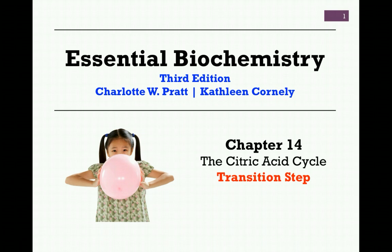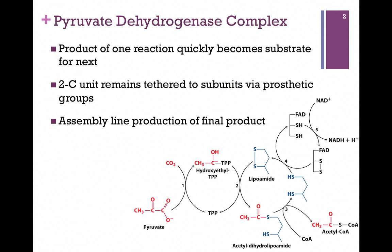In our second lesson on the citric acid cycle from chapter 14, we want to look in greater detail at the transition step, which converts pyruvate to acetyl-CoA. It's called the transition step because we're transitioning between glycolysis and the citric acid cycle.